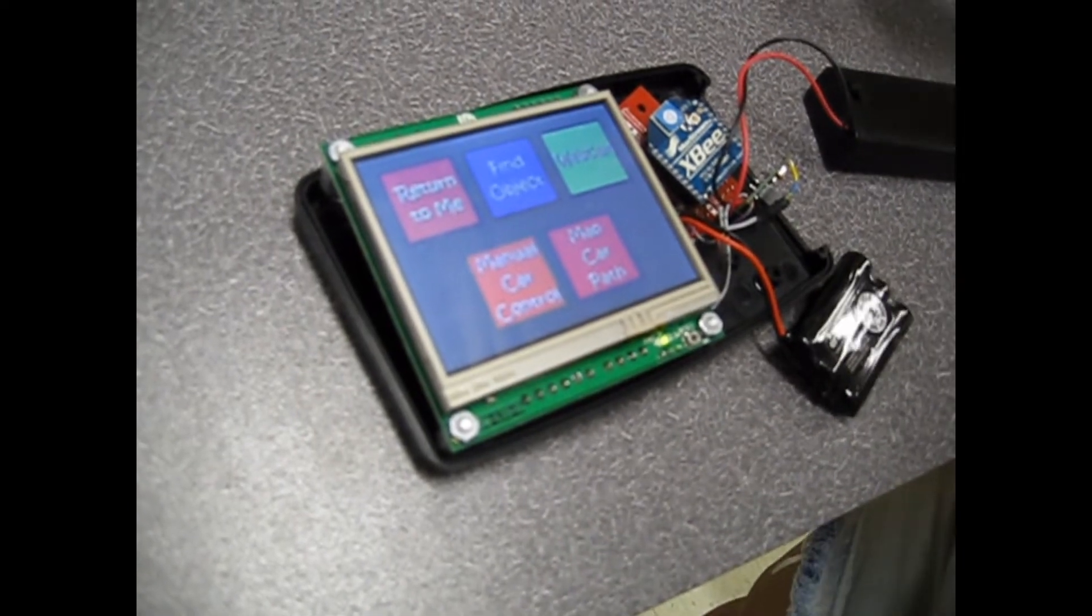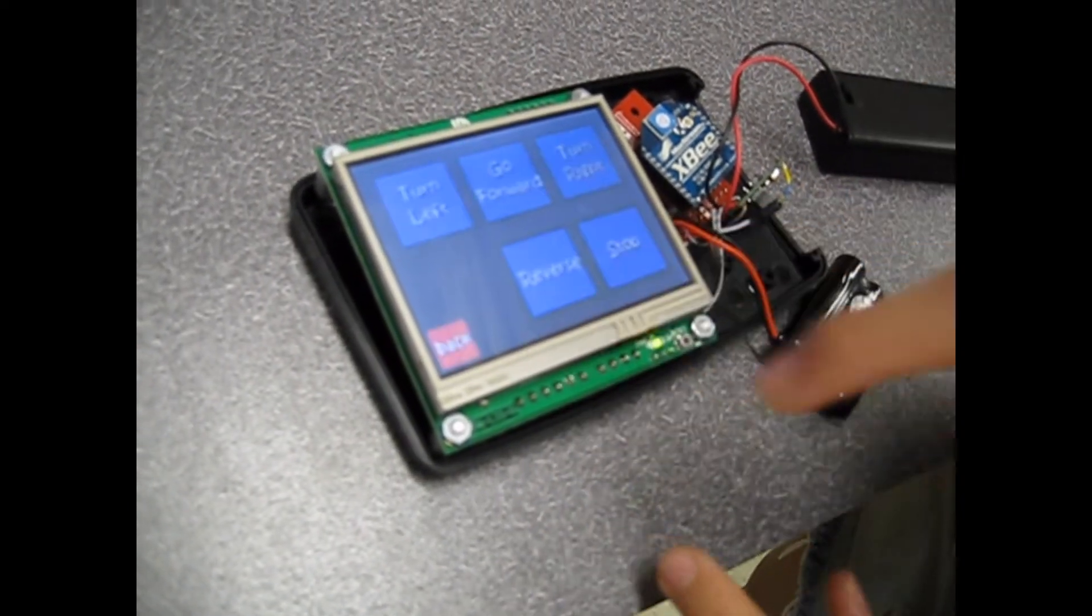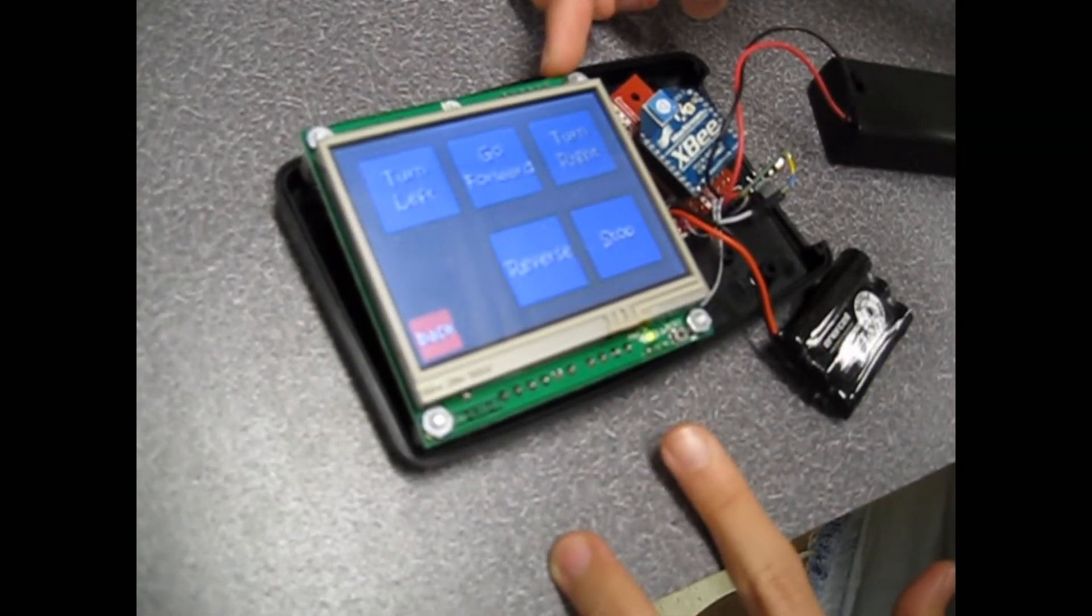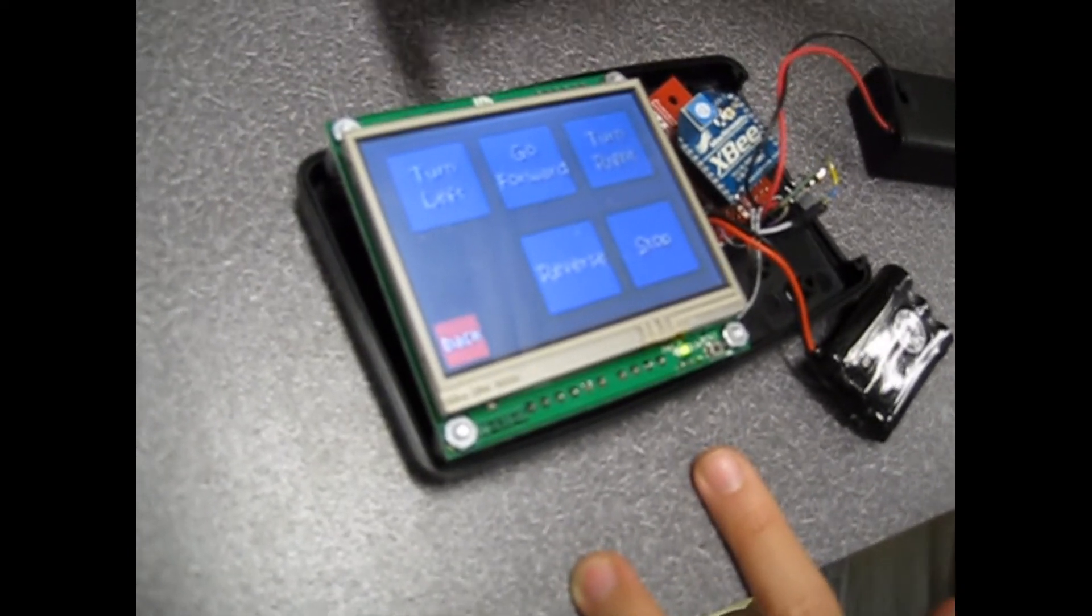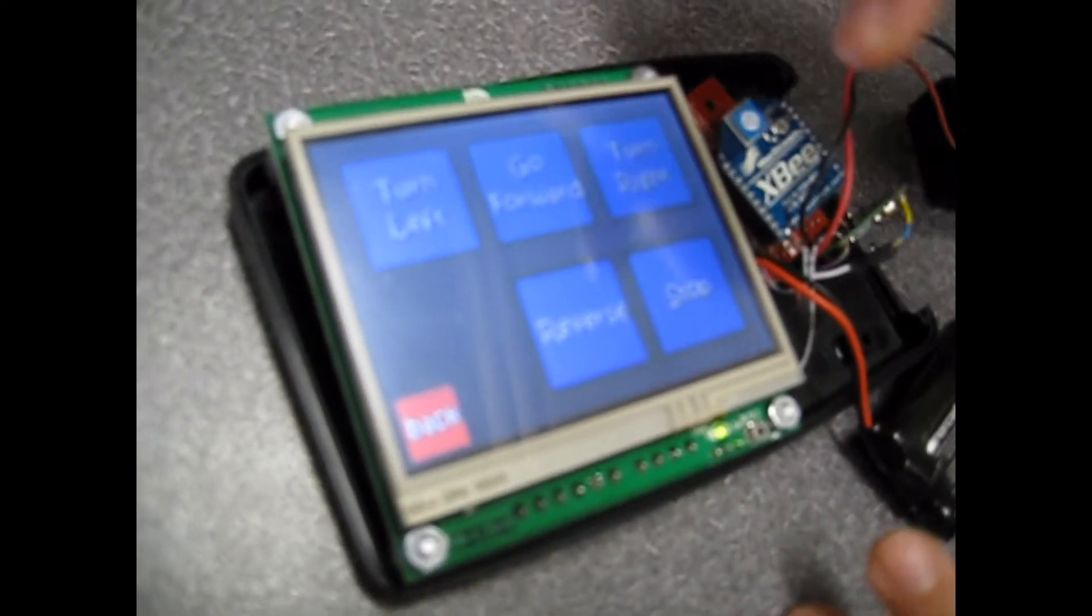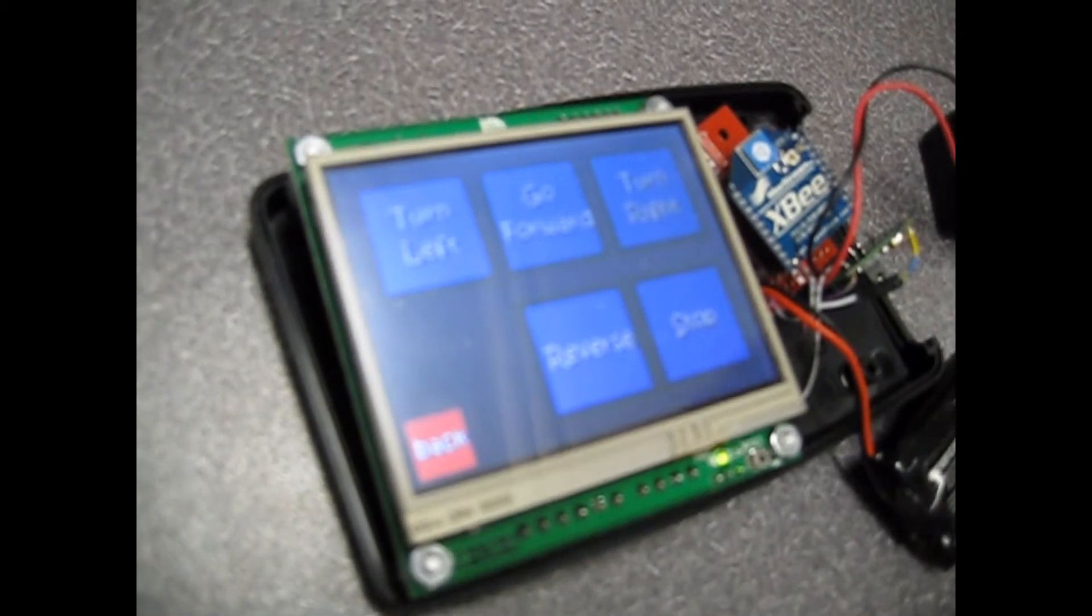So I will first demo Manual Car Control. These are the different controls you can do. You can turn left, go forward, turn right, reverse, or stop the car, and the back button takes you back to the GUI home screen.